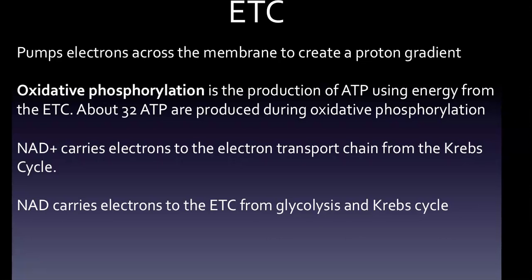Oxidative phosphorylation produces the most ATP during cellular respiration — about 32 ATP — compared to only 2 ATP during glycolysis and 2 ATP during the citric acid cycle. NAD+ carries electrons to the electron transport chain from both glycolysis and the Krebs cycle.